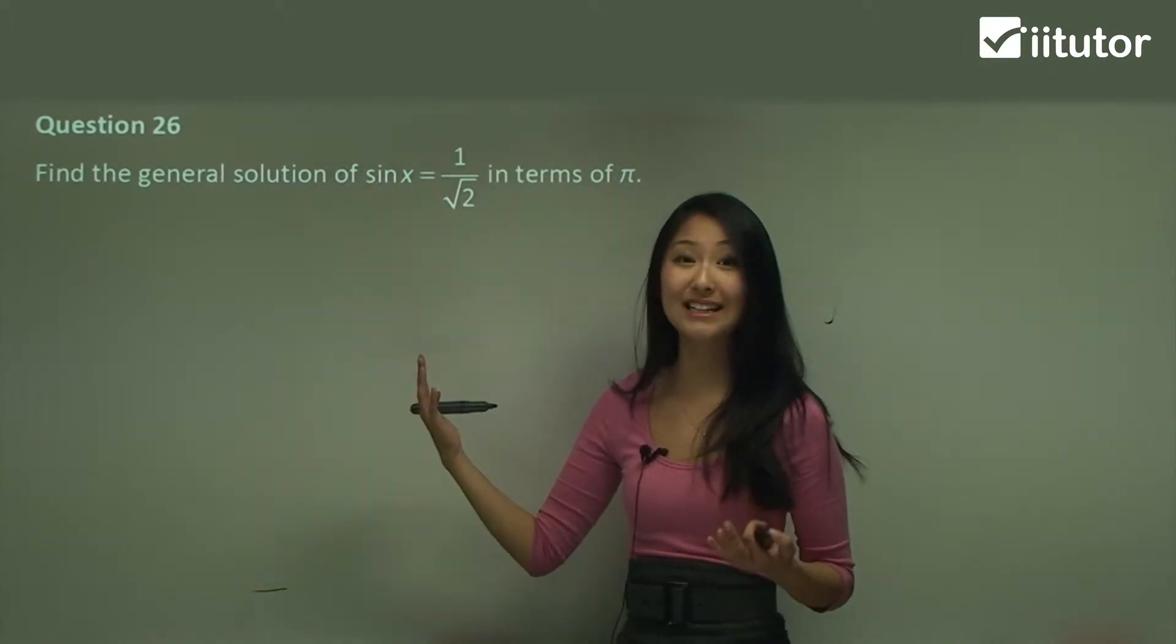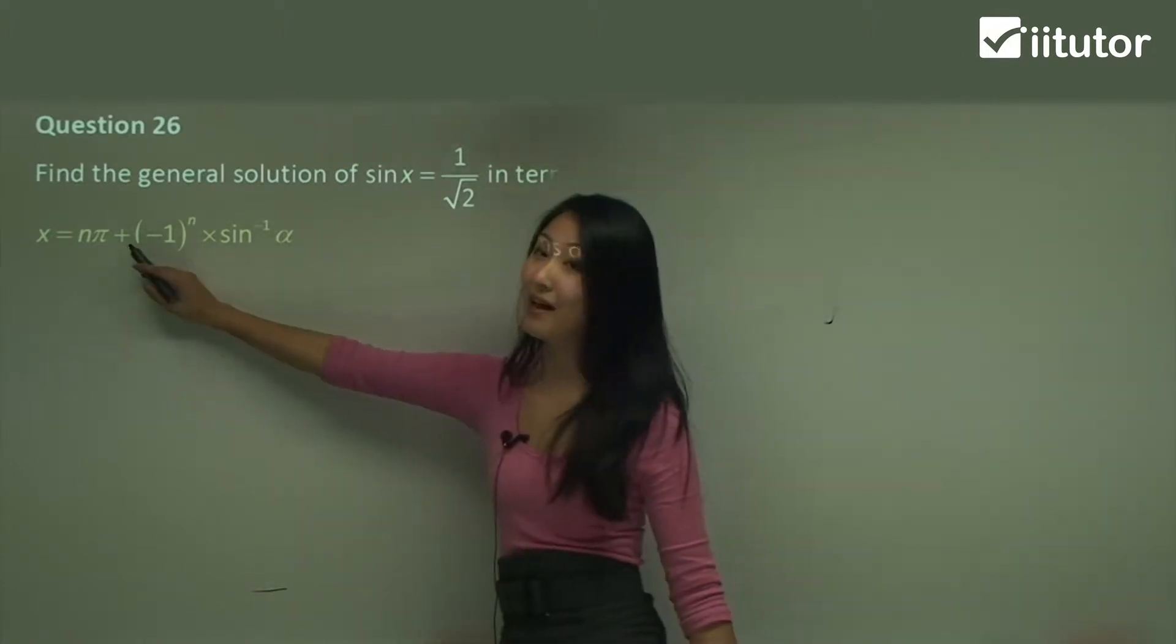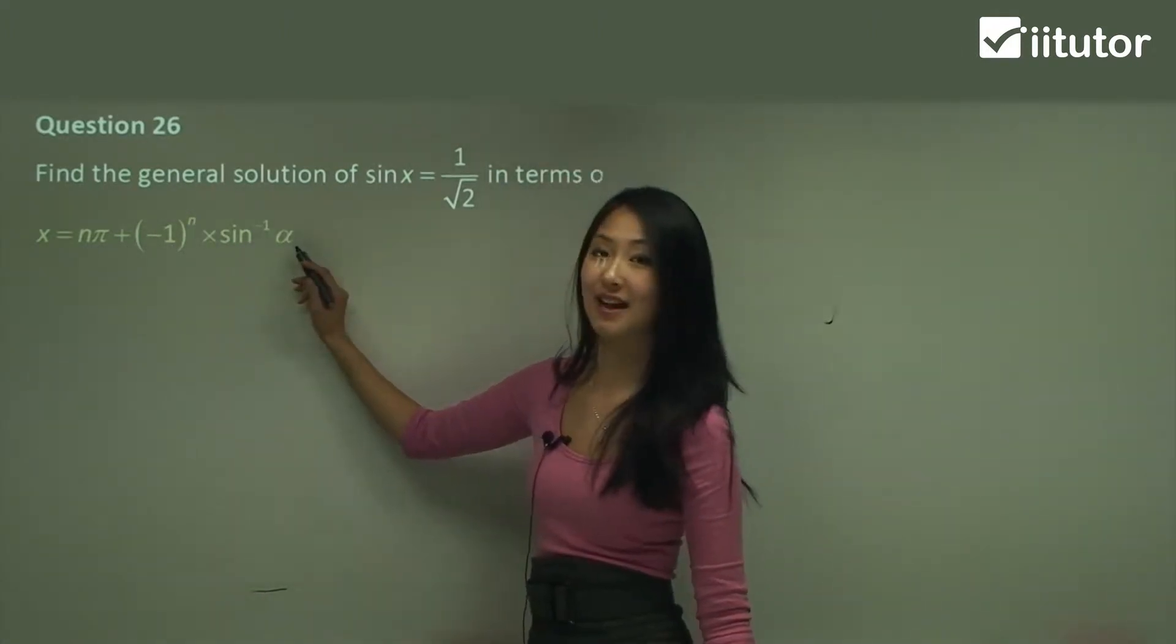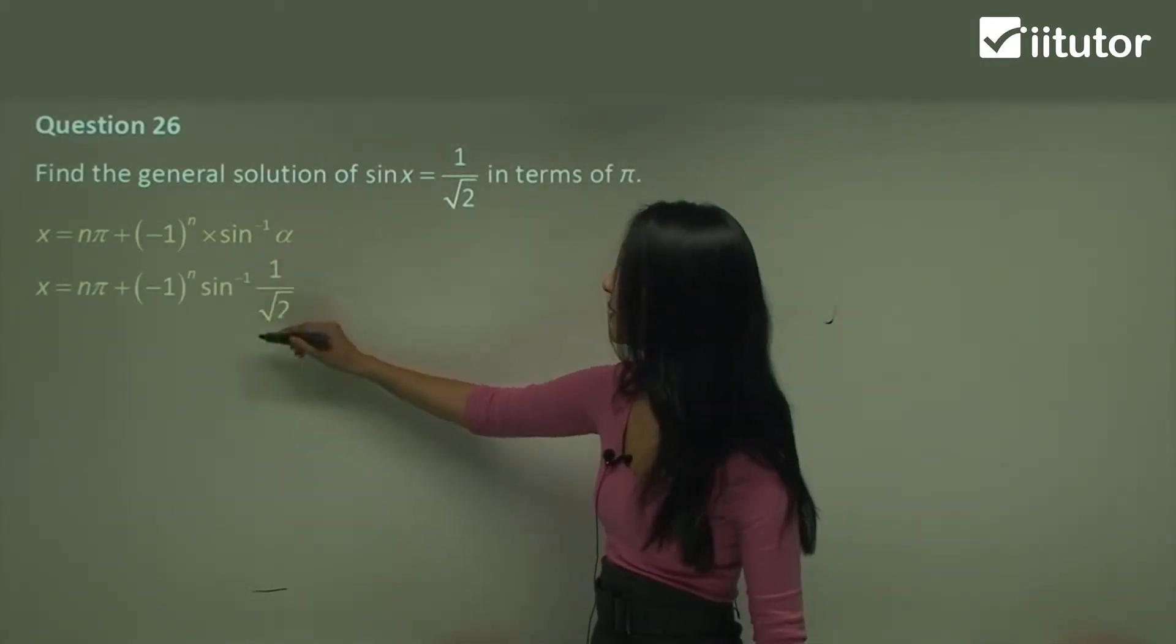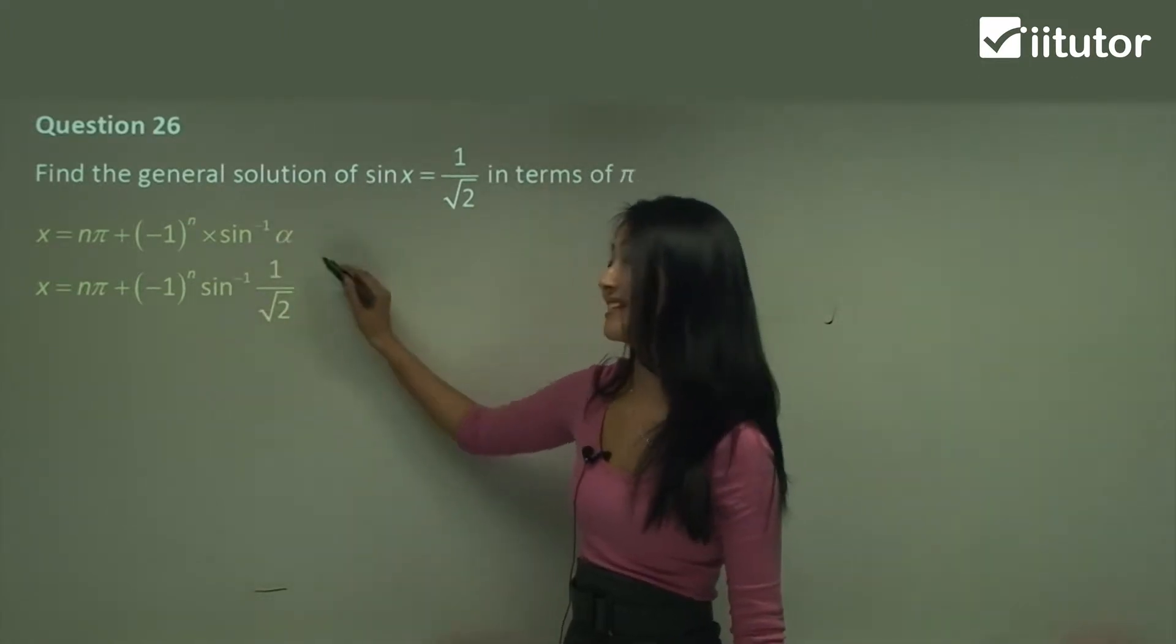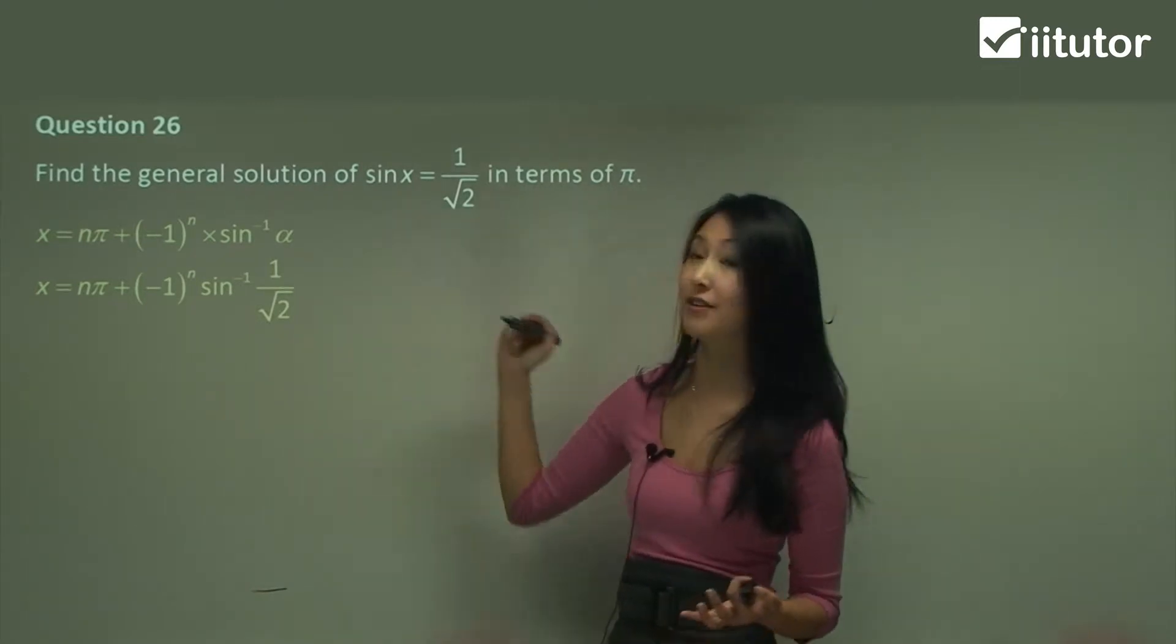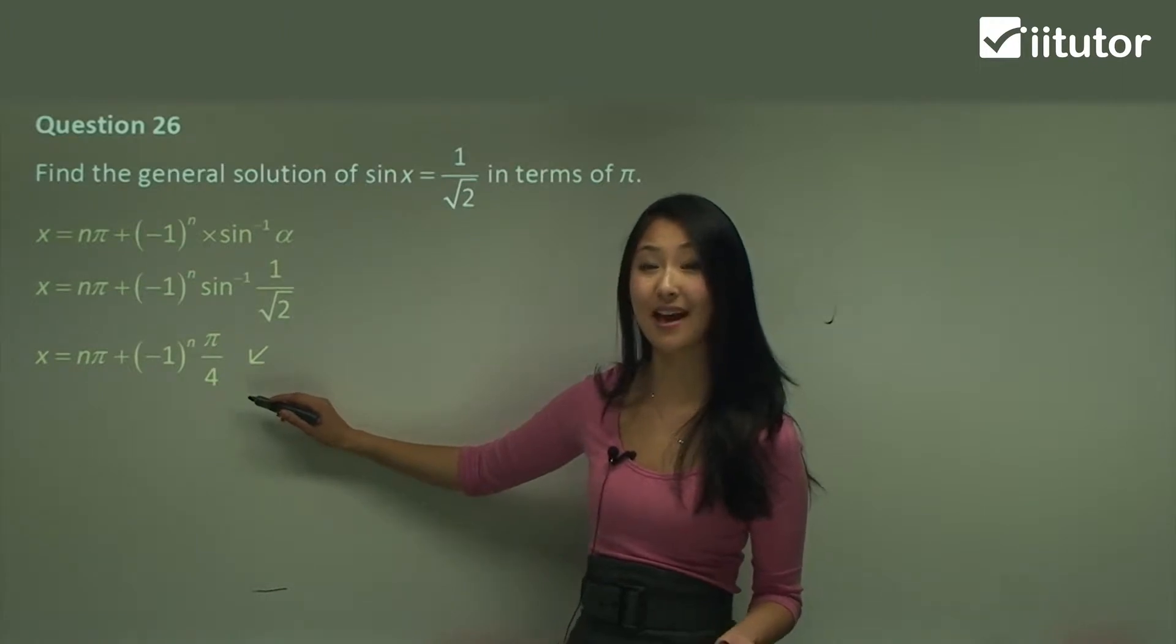So it really is just testing that you have memorized this equation here where x equals to n pi, negative 1 power of n multiplied by inverse sine alpha. So we just substitute this value in here and now we just need to work out this value there. So we think sine of what equals to 1 on square root 2. Great that's pi on 4 and that's your final answer there.